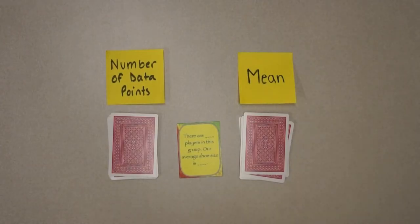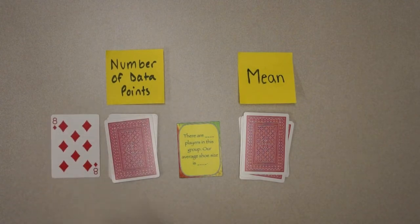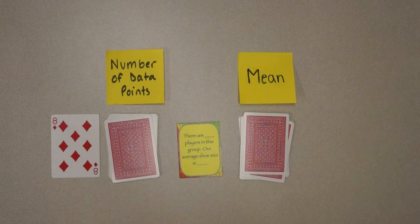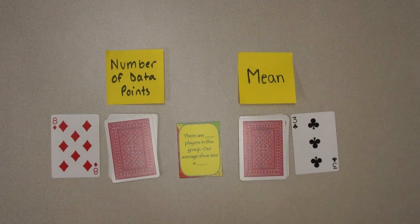The player with the longest hair is the first leader. As a leader, you will flip a card from the pile of red cards. This card represents the number of data points for this round. Then flip the top black card. The number represents the mean for this round.